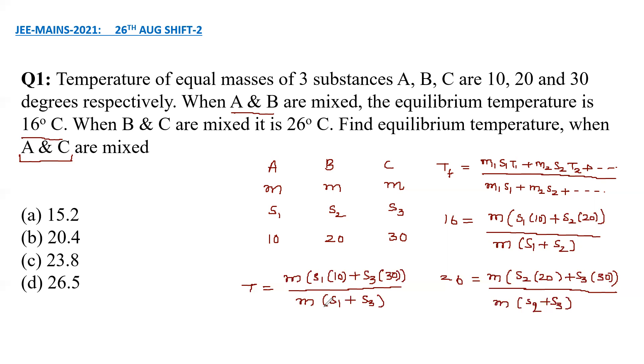So what we need and what is given, all of it is written and now we have to find out the final temperature when A and C are mixed. The easiest way of doing this is to find out the ratio of S1 and S3. From the given two equations or the information given, we can find out the ratio of S1 and S2, S2 and S3. So using that we can find out ratio of S1 and S3.